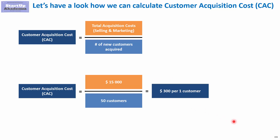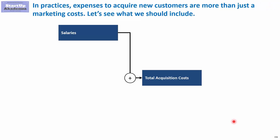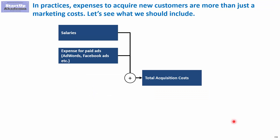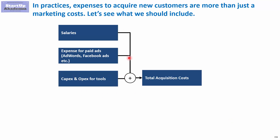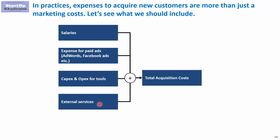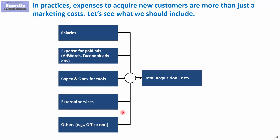When it comes to what costs we take into account, we obviously have salaries, expenses for paid ads like AdWords and Facebook ads, and CAPEX and OPEX related to the tools used in acquiring customers. In many cases, a big position will be external services — this includes outsourced parts of salaries and the purchase of ads through an agency. You can also have other costs like office costs.